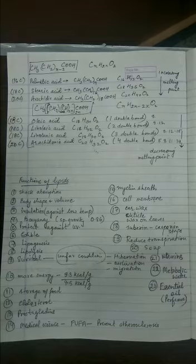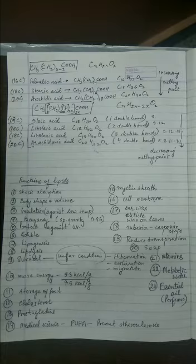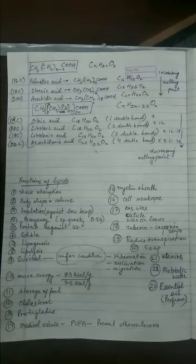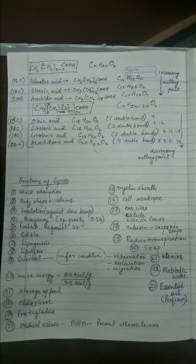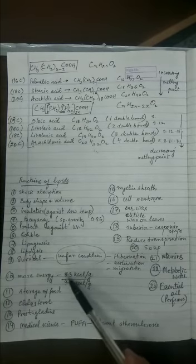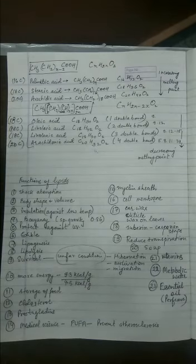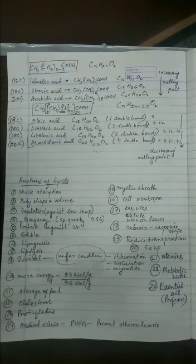So fat helps them to survive or pass the unfavorable condition. The next function of the fat is to provide us energy. Now when you compare per gram of the carbohydrate, carbohydrate once completely burned by aerobic respiration gives us 4.5 kilocalories of energy per gram of carbohydrate. But in comparison to that, fats give us more amount of energy, 9.3 kilocalories per gram of the fats.